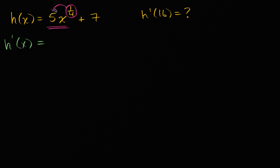We can multiply the 1/4 times the coefficient. So you have 5 times 1/4 times x^(1/4 - 1). That's the derivative of 5x^(1/4).